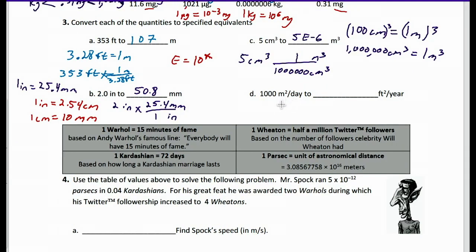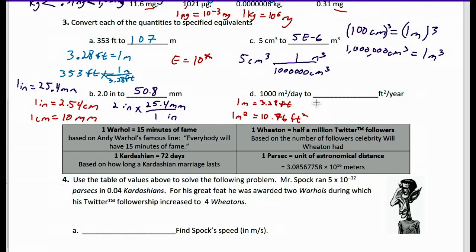Next, we have 1,000 meters squared per day and we want to convert that into feet squared per year. We know 1 meter is equivalent to 3.28 feet, so we need to square both: 1 meter squared equals 3.28 squared, which is 10.76 feet squared. For days to years, there are 365 days in one year, assuming it's not a leap year.